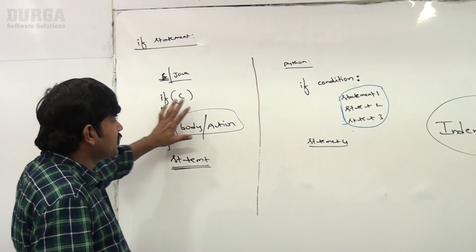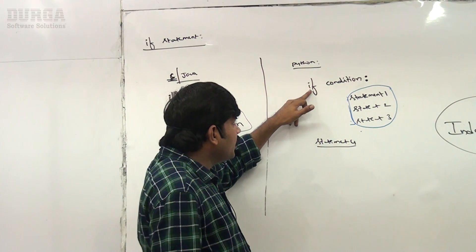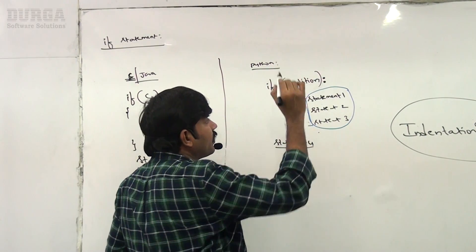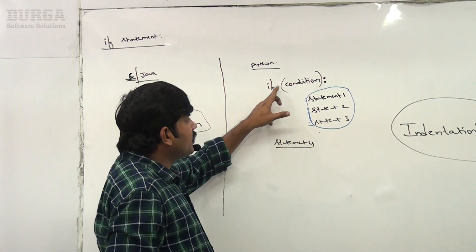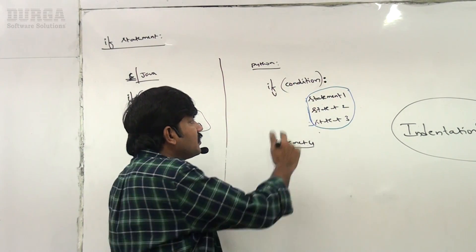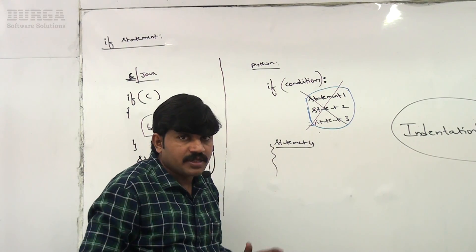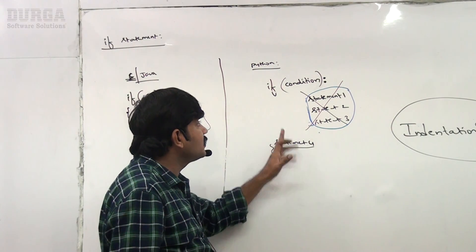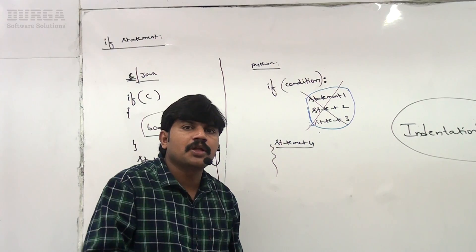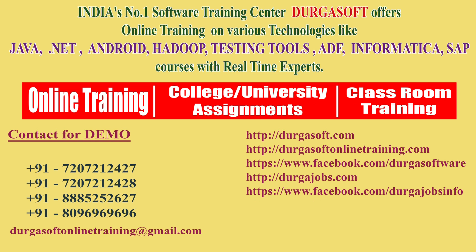Now let's look at the syntax of the if statement. If a condition is satisfied — parentheses are optional — execute this statement. If the condition is not satisfied, skip those statements and continue with the remaining code. This is the basic if statement syntax. Let me go through a small example to give you much more clarity.